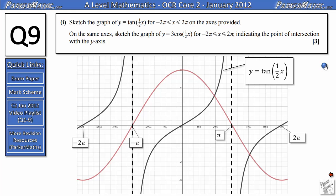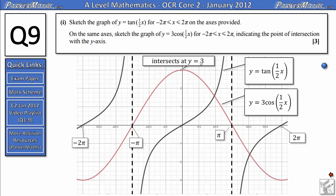It's not actually necessary to label the x-intercepts in this question, but it does say indicating the point of intersection with the y-axis, and that's for this graph here. So it's really important that you do label that your graph passes through the y-axis at y = 3 up here.